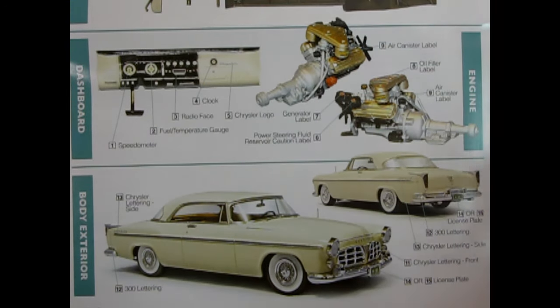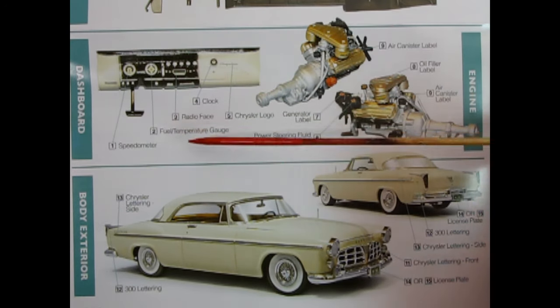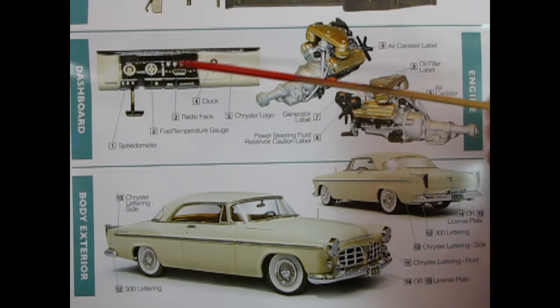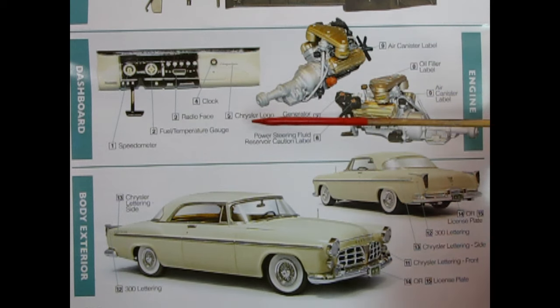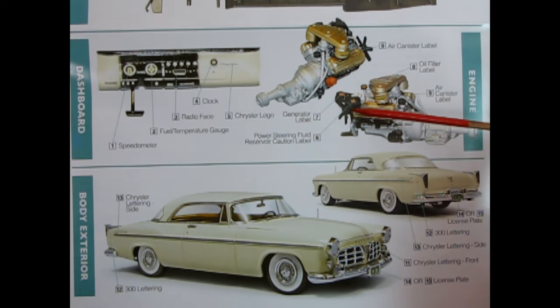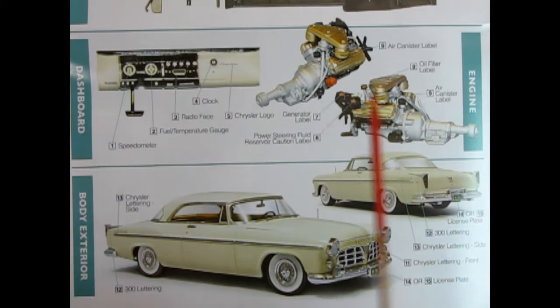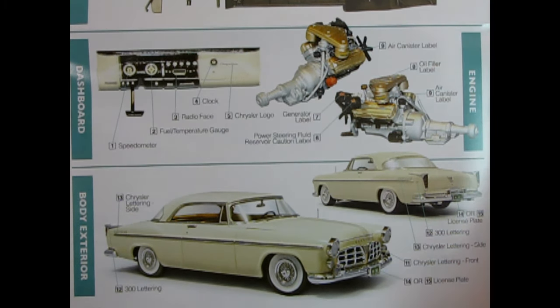The lower portion of the instruction sheet also shows the dashboard. And you have your speedometer decal, fuel temperature gauge decal, radio face decal, clock, Chrysler logo. There's our engine all built up. We've got the air canister label, the generator label, power steering fluid reservoir caution label, oil filler label, air canister label. So a lot of cool decals just to dress this all up and make it look accurate.